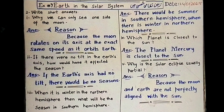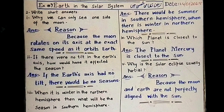When there is winter in the Northern Hemisphere, there will be summer in the Southern Hemisphere. The Northern Hemisphere will be cold while the Southern Hemisphere will be warm.